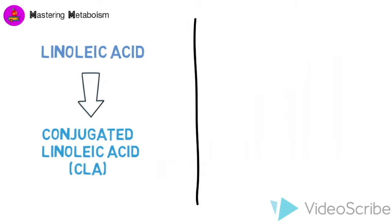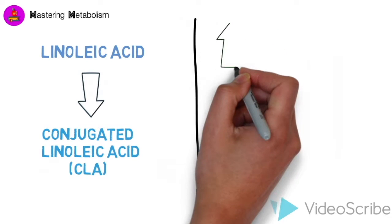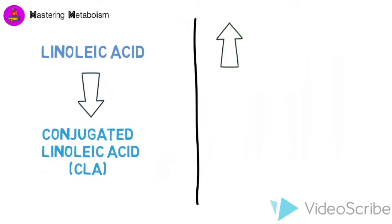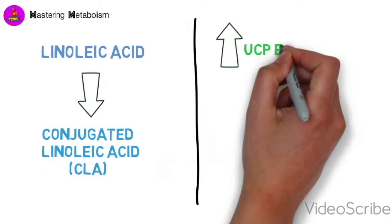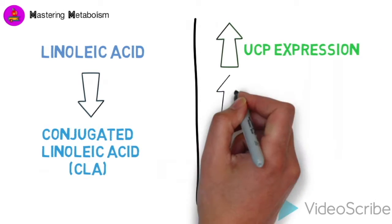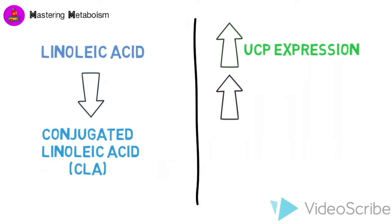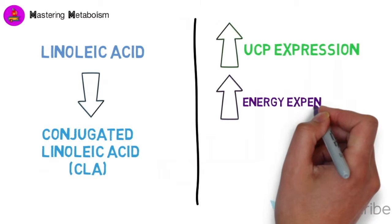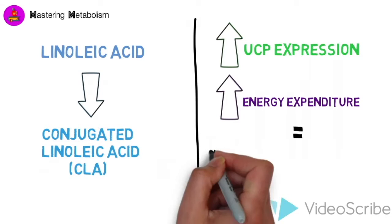Multiple mechanisms have been hypothesized to explain the effect of CLA on body fat reduction. In this video, we will cover two. First, CLA is thought to cause an increase in energy expenditure by upregulating the expression of uncoupling proteins, or UCPs.